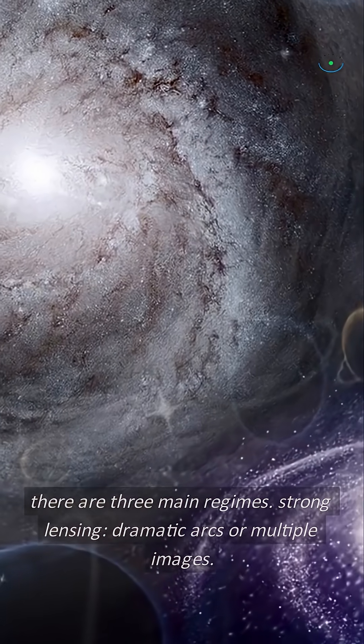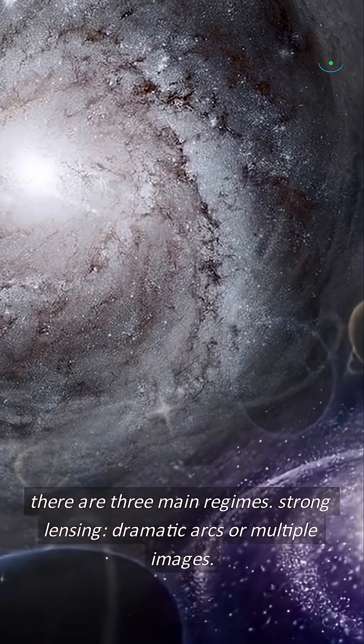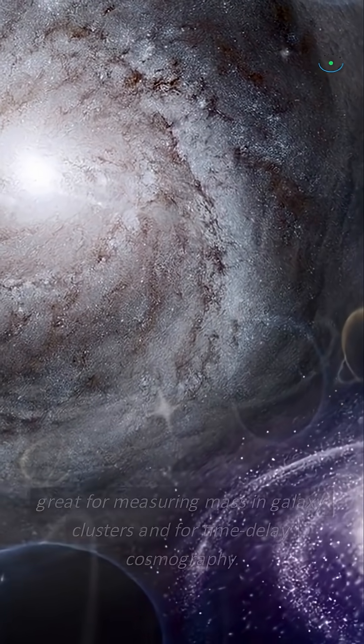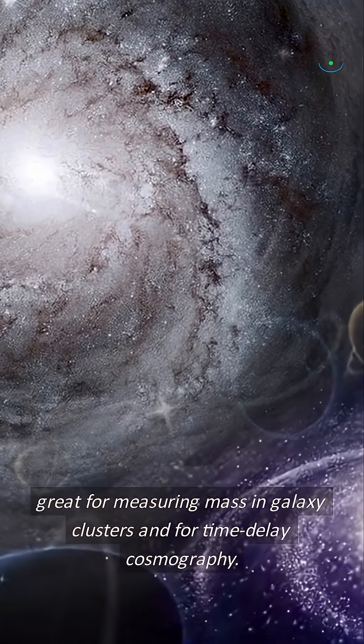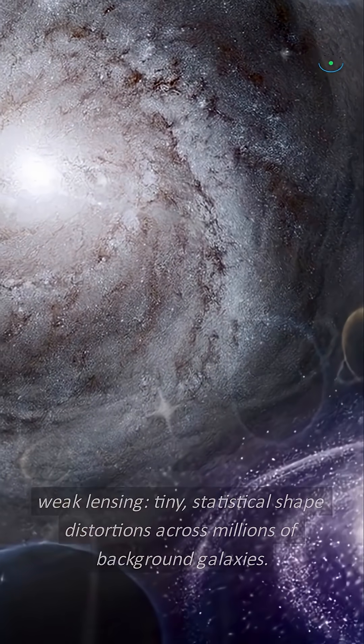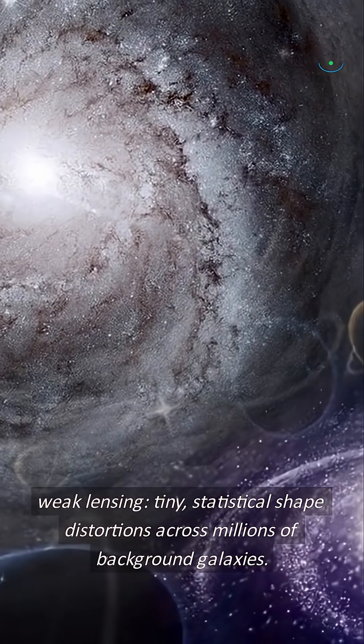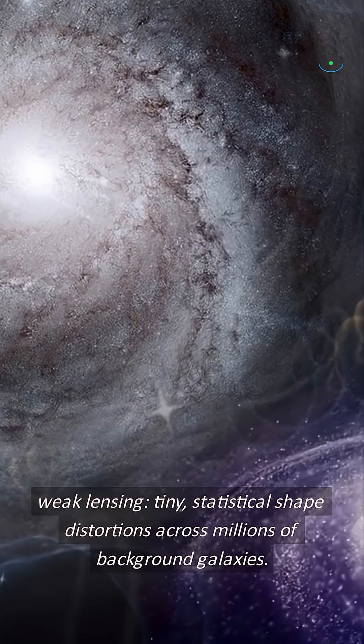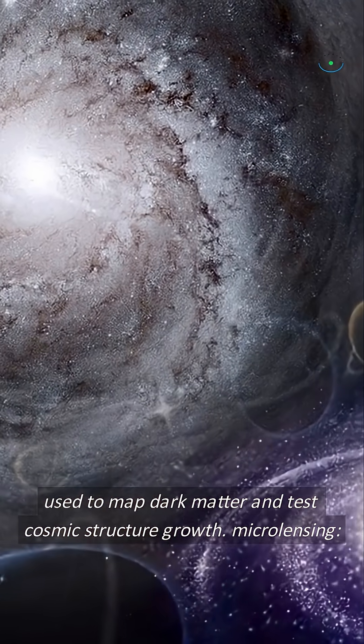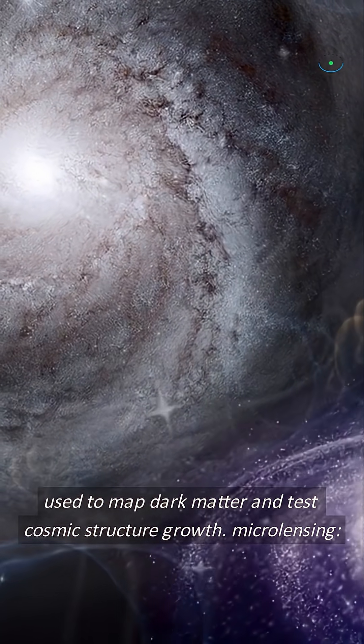There are three main regimes: strong lensing, dramatic arcs or multiple images, great for measuring mass in galaxy clusters and for time-delay cosmography. Weak lensing: tiny statistical shape distortions across millions of background galaxies, used to map dark matter and test cosmic structure growth.